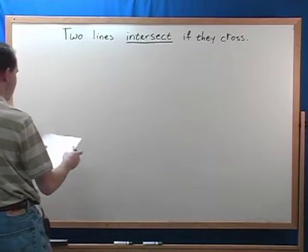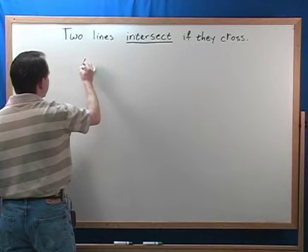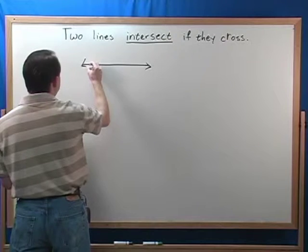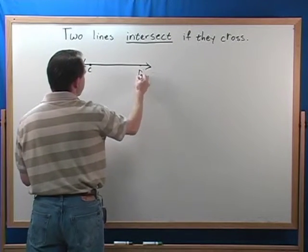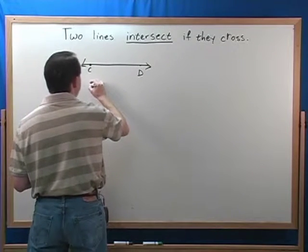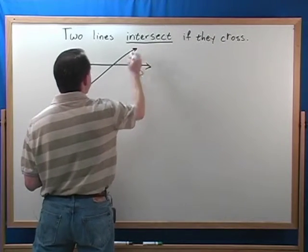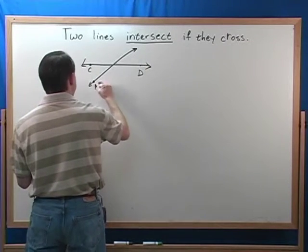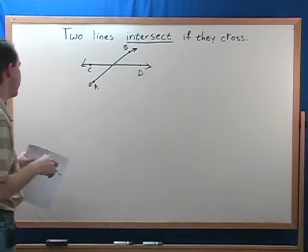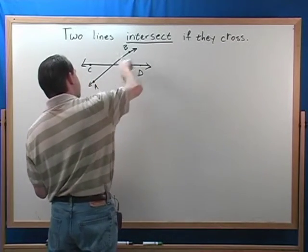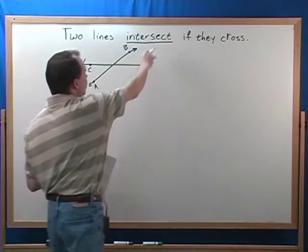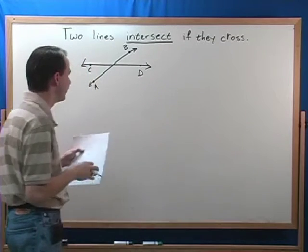So we're going to see that time and time again in geometry. So what we're going to do is just draw a little example. Here's a line. This line goes through point C, and this line goes through point D. And we have another line that goes up like this, and this line goes through point A, and this line goes through point B. But you can see right away that this line CD and this line AB, they actually cross each other right here at this point, and we call that the intersection point. We say that these two lines intersect each other.